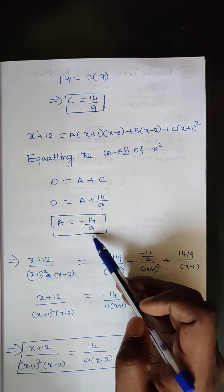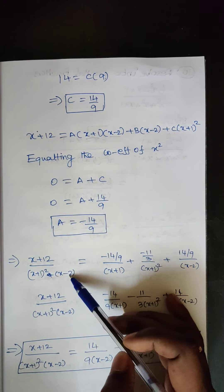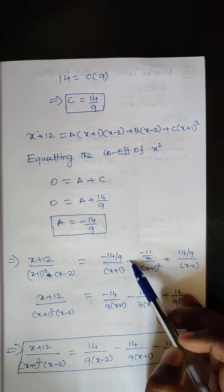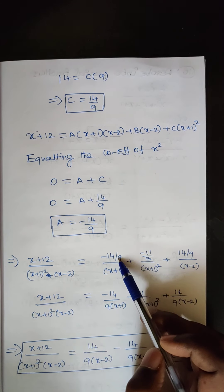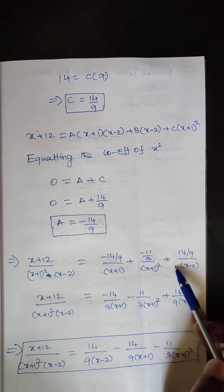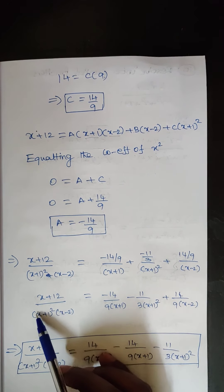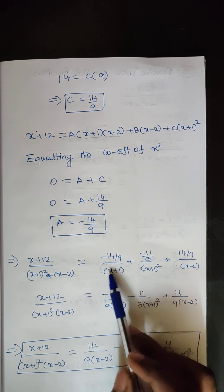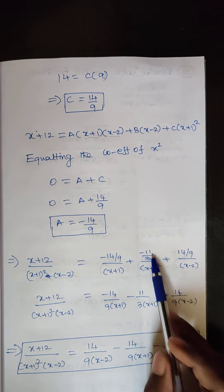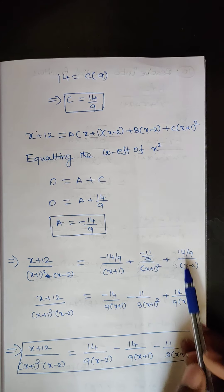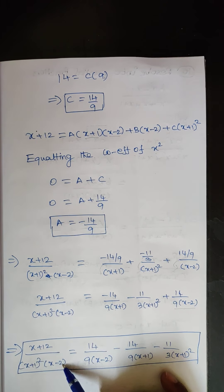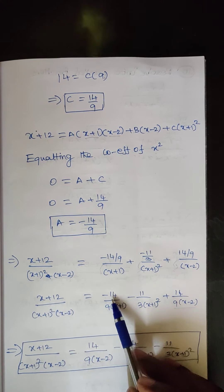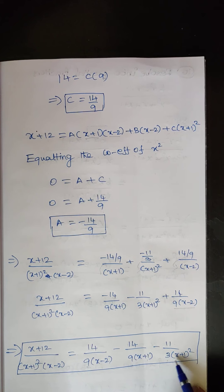Substituting all values, (x + 12) / [(x + 1)²·(x − 2)] equals (−14/9)/(x + 1) plus (−11/3)/(x + 1)² plus (14/9)/(x − 2). Rearranging with the positive term first: 14/[9(x − 2)] minus 14/[9(x + 1)] minus 11/[3(x + 1)²]. That is the answer. Thank you.